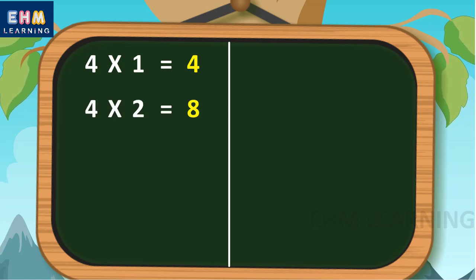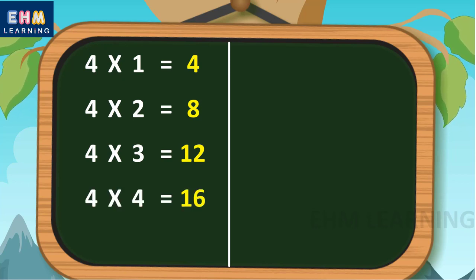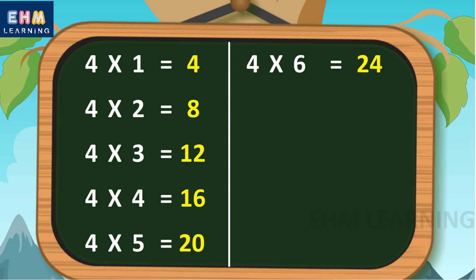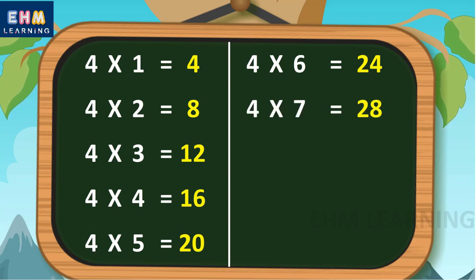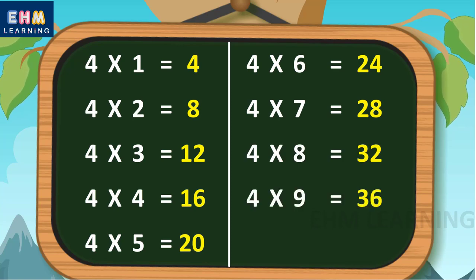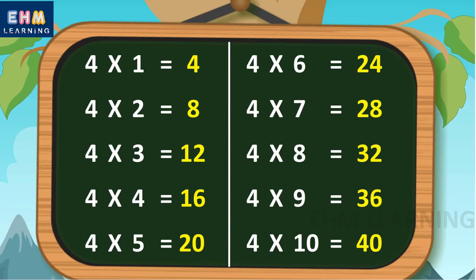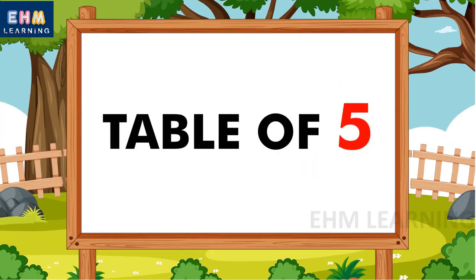Four ones are four, four twos are eight, four threes are twelve, four fours are sixteen, four fives are twenty, four sixes are twenty-four, four sevens are twenty-eight, four eights are thirty-two, four nines are thirty-six, four tens are forty.